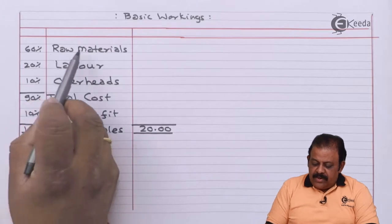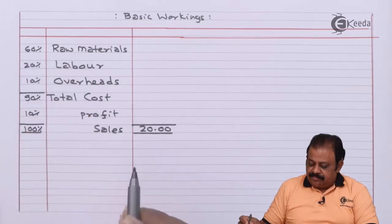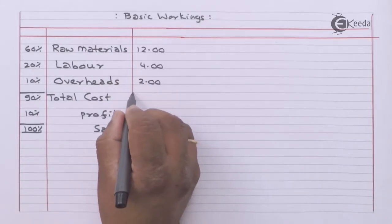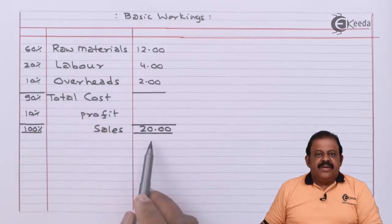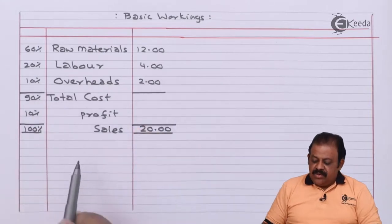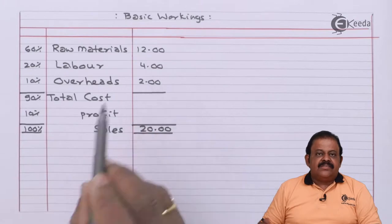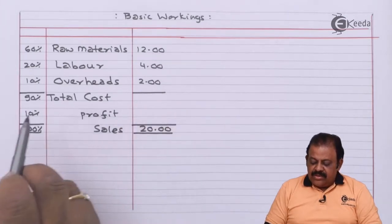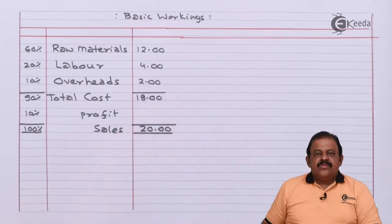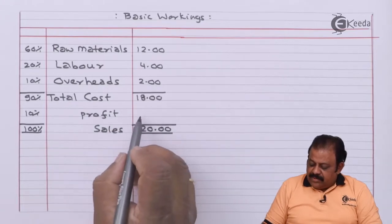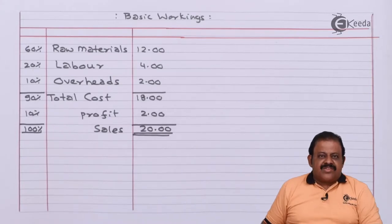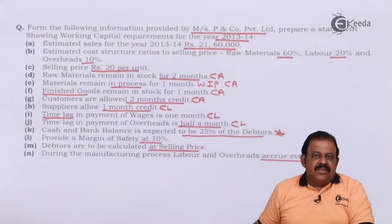Raw material: 60% of rupees 20 = rupees 12. Labour: 20% of rupees 20 = rupees 4. Overheads: 10% of rupees 20 = rupees 2. Total cost: 90% of rupees 20 = rupees 18. Profit: 10% of rupees 20 = rupees 2. This is how we get the cost structure. Most information is given on a monthly basis.